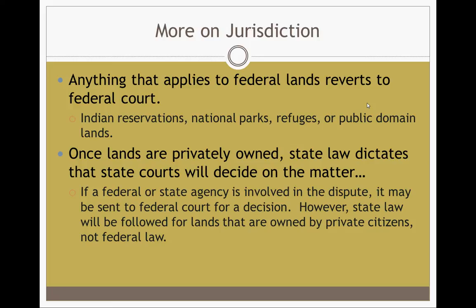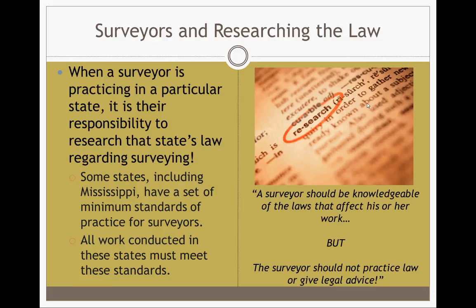That's why you have to be licensed in different states — because the law is different from state to state. Even Mississippi and Alabama, two states very close to each other, have very big differences in their law. When you're practicing in a particular state, it is your responsibility to research that state's law regarding surveying. Some states, including Mississippi, have a set of minimum standards or standards of practice for surveyors. All work conducted in these states must meet these standards, or you're going to miss the bar set by that state's governmental bodies.